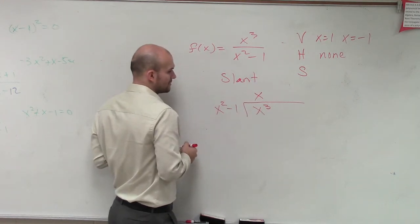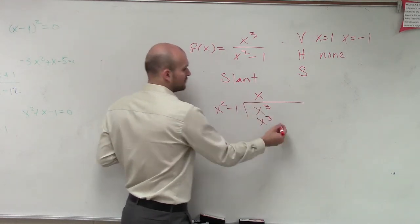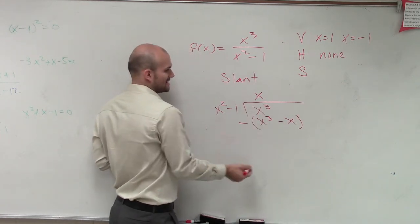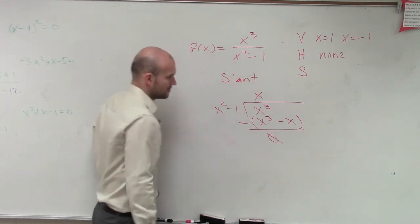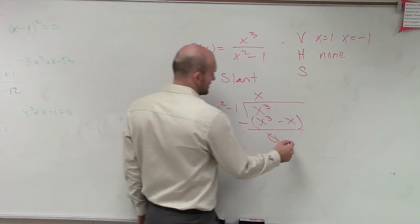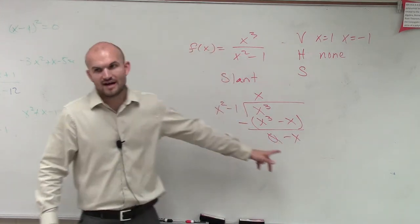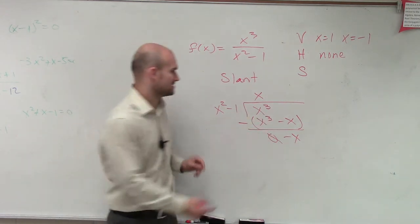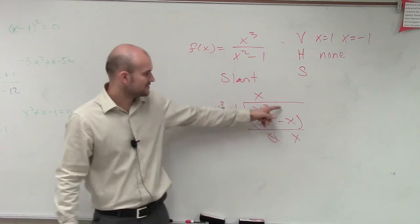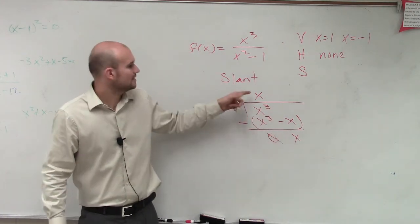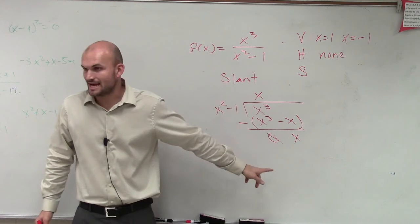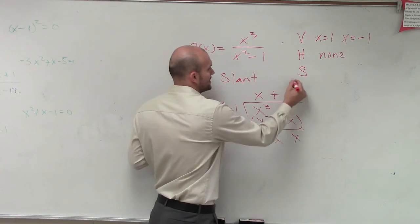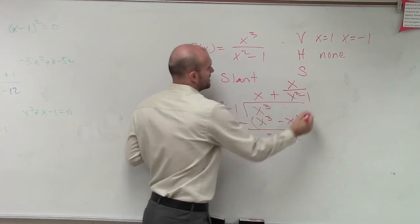x times x squared is x cubed. x times negative 1 is negative x. Subtract: x cubed minus x cubed is 0. 0 minus negative x squared gives us positive x. Does x squared divide into x? No, it doesn't divide evenly. So that becomes our remainder, and we write x over x squared minus 1.